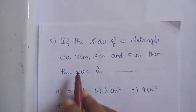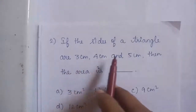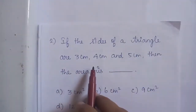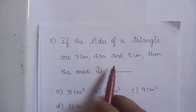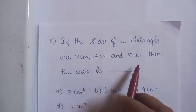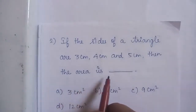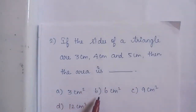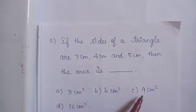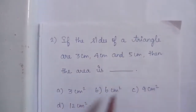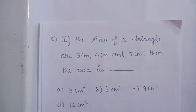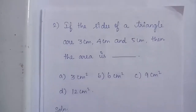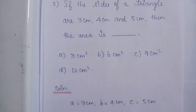Question No. 2: If the sides of a triangle are 3 cm, 4 cm, and 5 cm, then the area is dash. Option A: 3 cm square. Option B: 6 cm square. Option C: 9 cm square. Option D: 12 cm square.